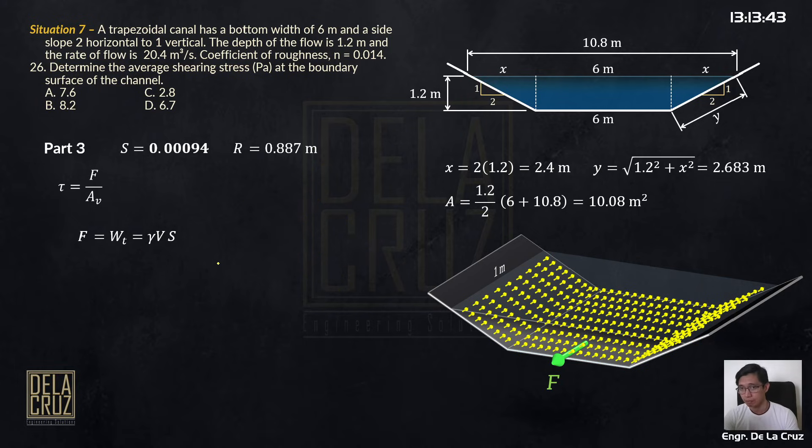So gamma volume times S. And the volume here, we have gamma. The volume is the cross-sectional area of flow, the A. Consider 1 meter strip times 1 meter times the slope. And the shearing area - look at the shearing area, this, where the shearing stresses are distributed. That is the perimeter, wetted perimeter, what's wet, times 1 meter. Wetted perimeter times 1 meter. We'll substitute this here. The F as this, and the shearing area is that one.